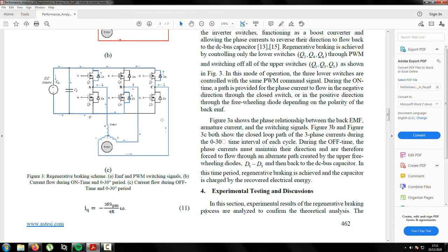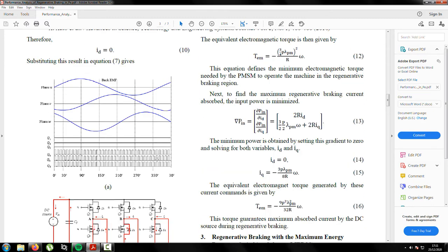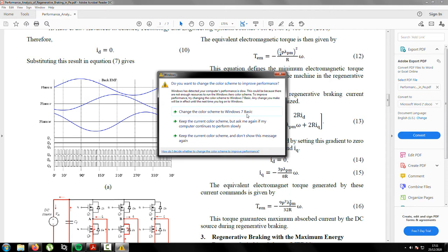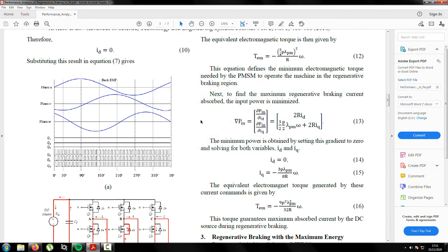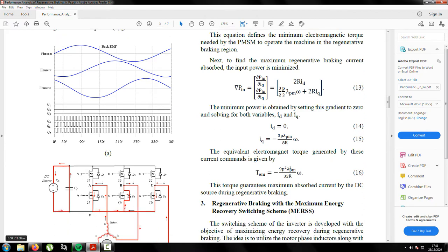The switching schemes would seem pretty complicated but it's actually really simple. Say for instance the car or bike is just going along, there's no power going into the motor or coming out and you've got these three sine waves which can be measured at the motor phases. When you lift off the throttle, the car will start regenerating.